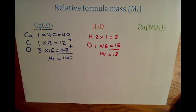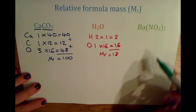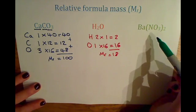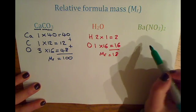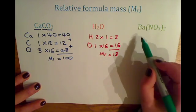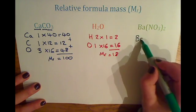And finally, for barium nitrate, this is the most difficult one you'll find if you have brackets in your compound. But you do exactly the same method as before and write down your elements. So we've got barium, nitrogen, oxygen.